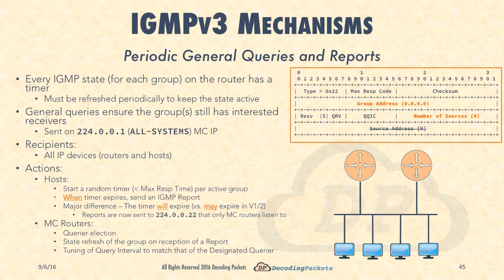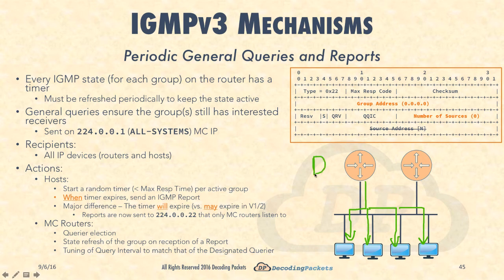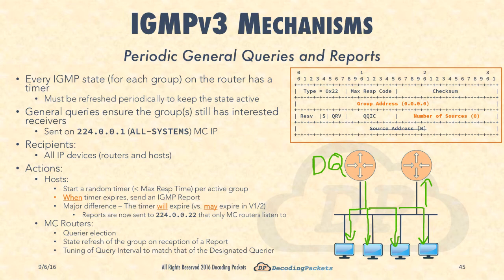The next action is periodic general queries. Periodically, routers must send something completely unsolicited and periodic, asking all multicast receivers on a particular subnet which groups they're still interested in. This is the job of the designated querier - one router is chosen as designated querier, usually the lowest IP. That querier sends a periodic query every some number of seconds - something like 60 or 120 - and every router and multicast host on that segment will receive this query. The goal is to periodically refresh the state of each and every group.